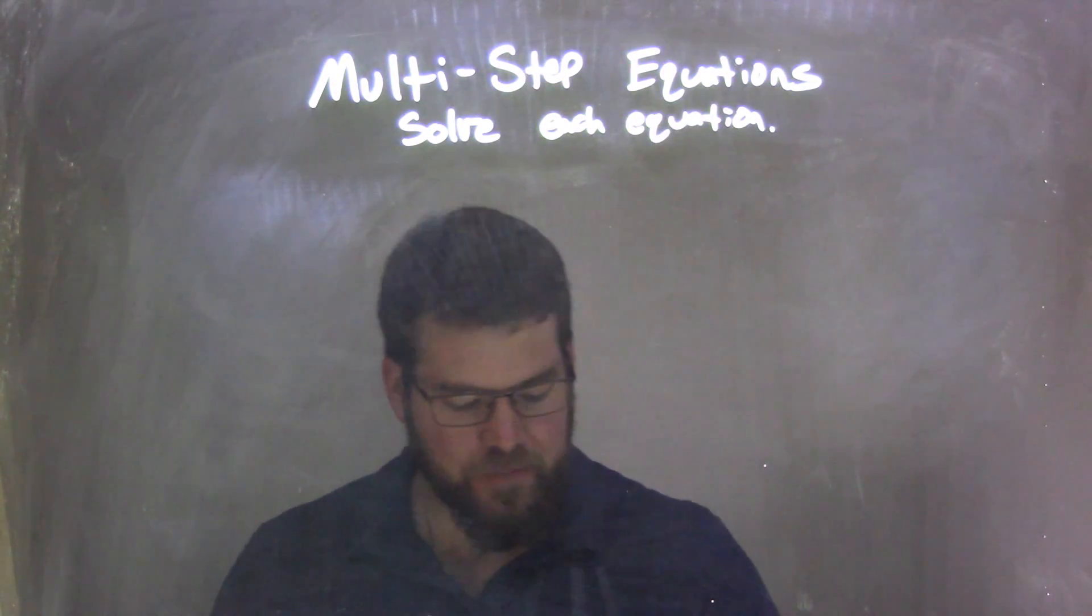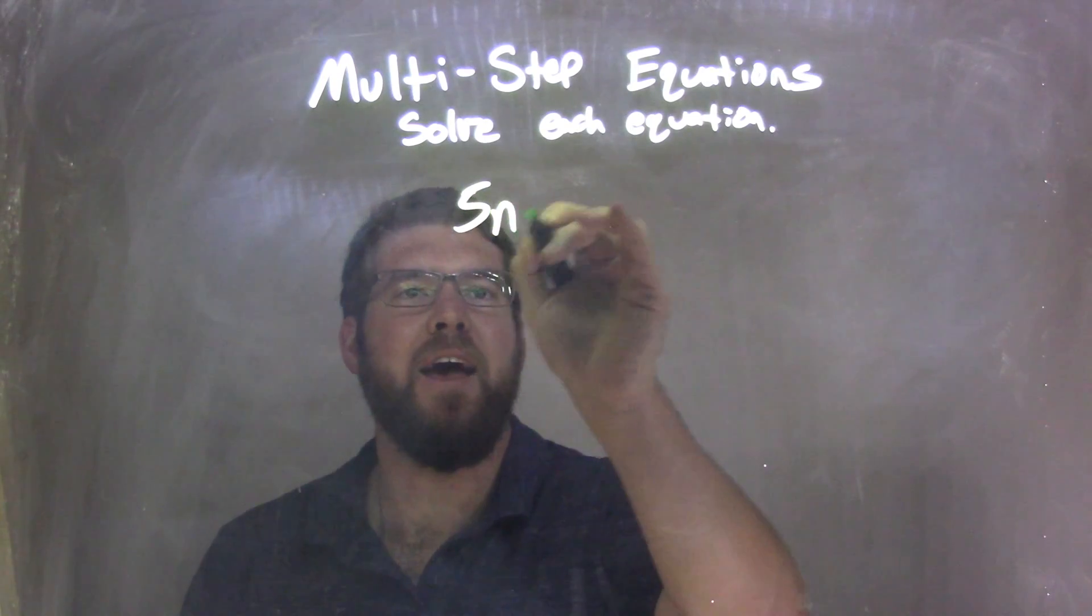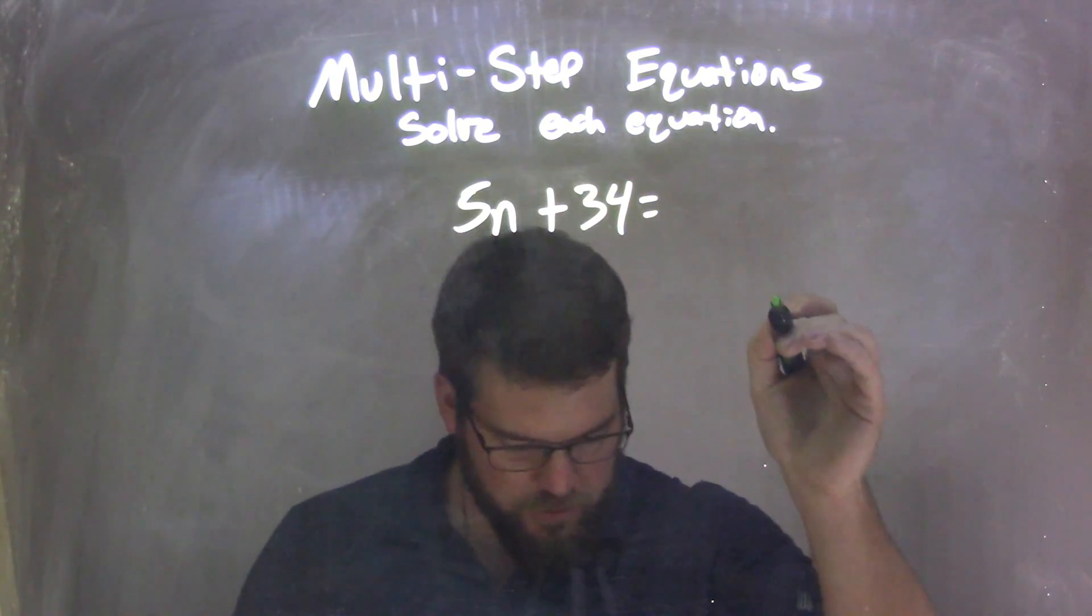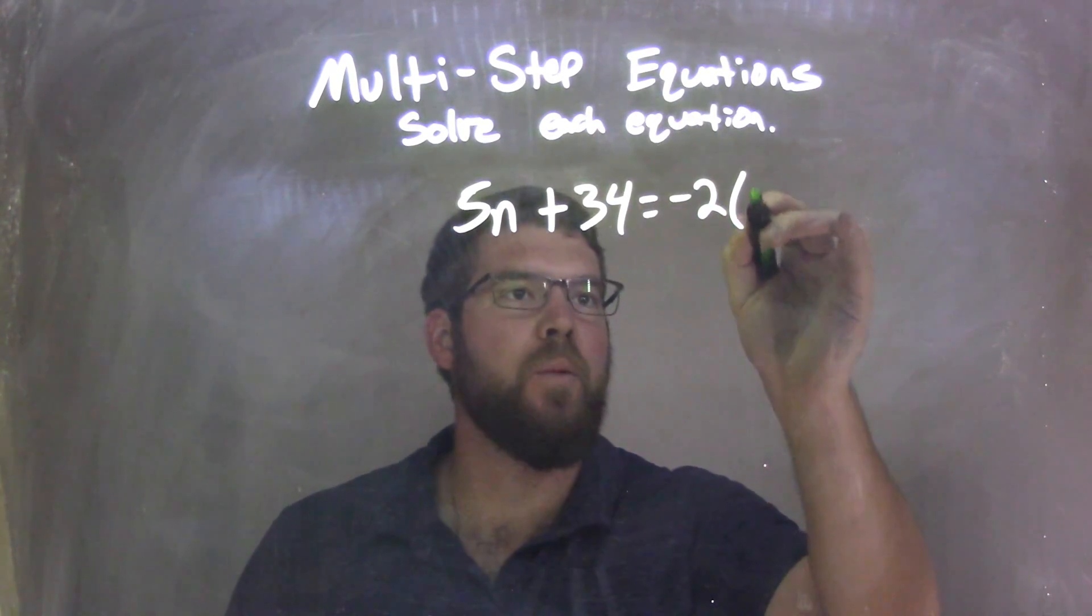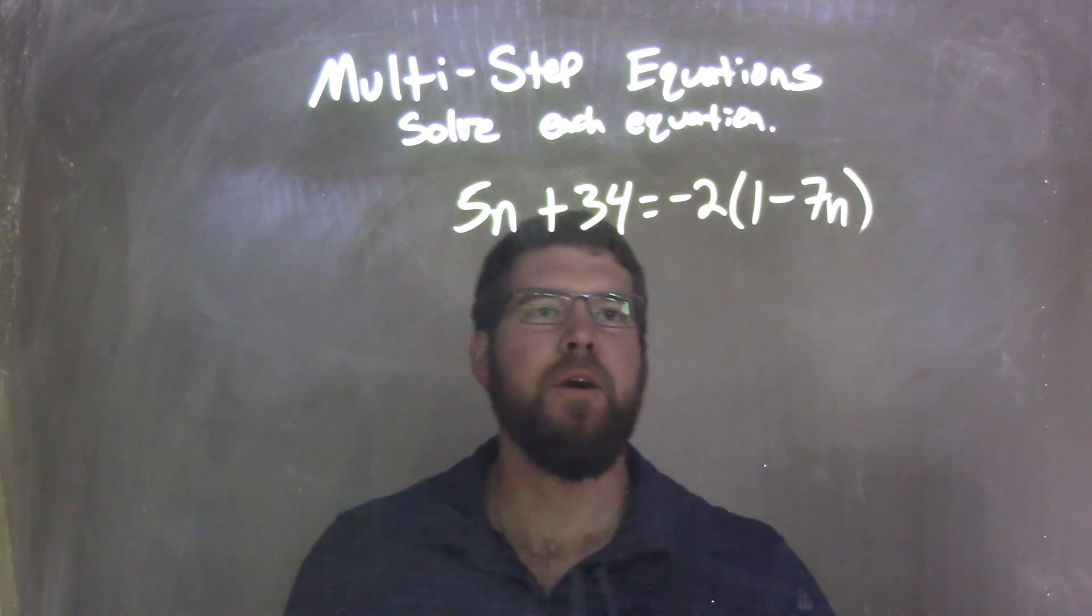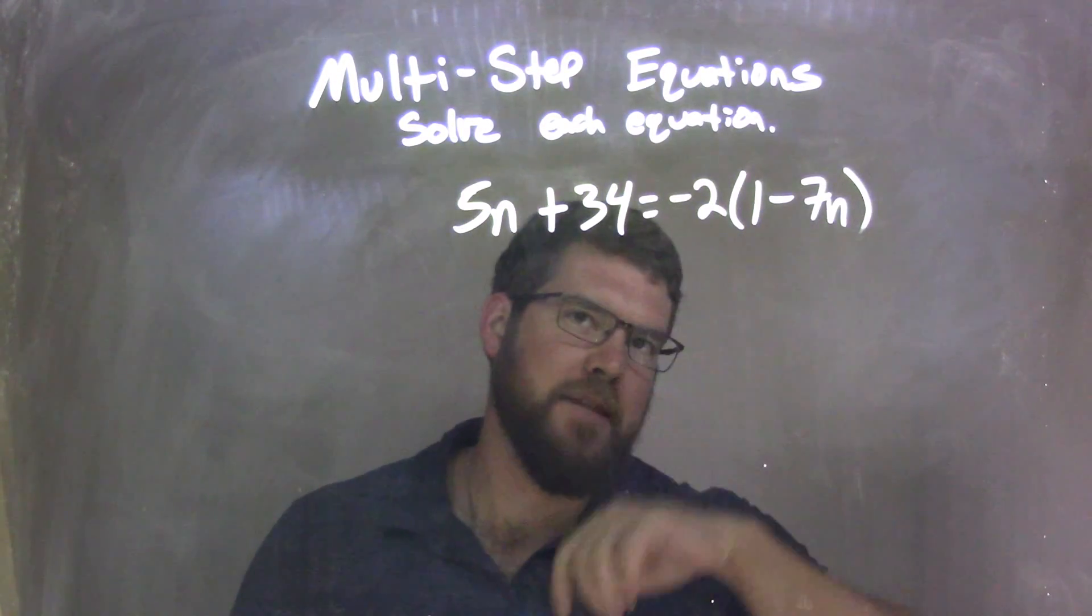If I was given this equation, 5n plus 34 equals negative 2 times 1 minus 7n. So I have 5n plus 34 equals negative 2 times 1 minus 7n.